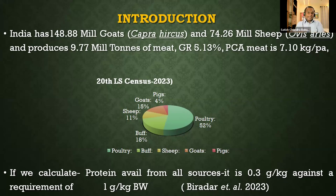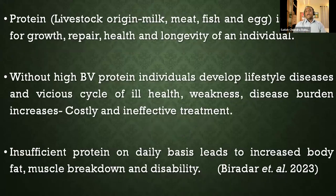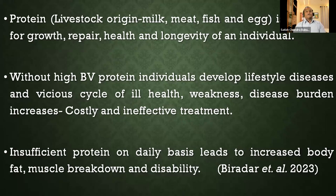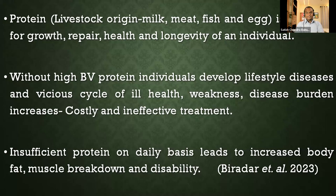The requirement and demand for protein is not being met. People who are supposed to be consuming this high quality protein are not getting it. Protein — the first nutrient of concern — especially from livestock origin such as milk, meat, egg, and fish, has a very high biological value. It is needed for growth, health, repair, and longevity. Without this high biological value protein, we have a tendency to suffer from lifestyle diseases.